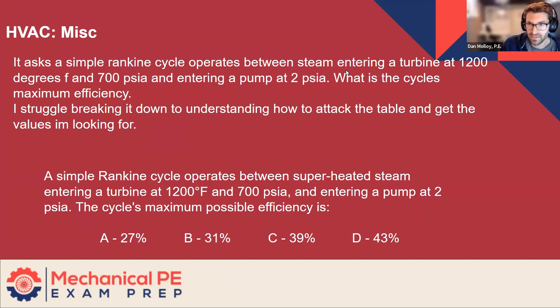Question asks: a simple Rankine cycle operates between steam entering a turbine at 1,200 degrees F and 700 PSIA and entering a pump at 2 PSIA. What is the cycle's maximum efficiency? I struggle breaking it down to understand how to attack the table and get the values I'm looking for.